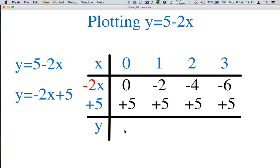However, it is a plus, so 0 plus 5 is 5. Minus 2 plus 5 is 3. Minus 4 plus 5 is 1. And minus 6 plus 5 is minus 1. Now, we can write our coordinates.